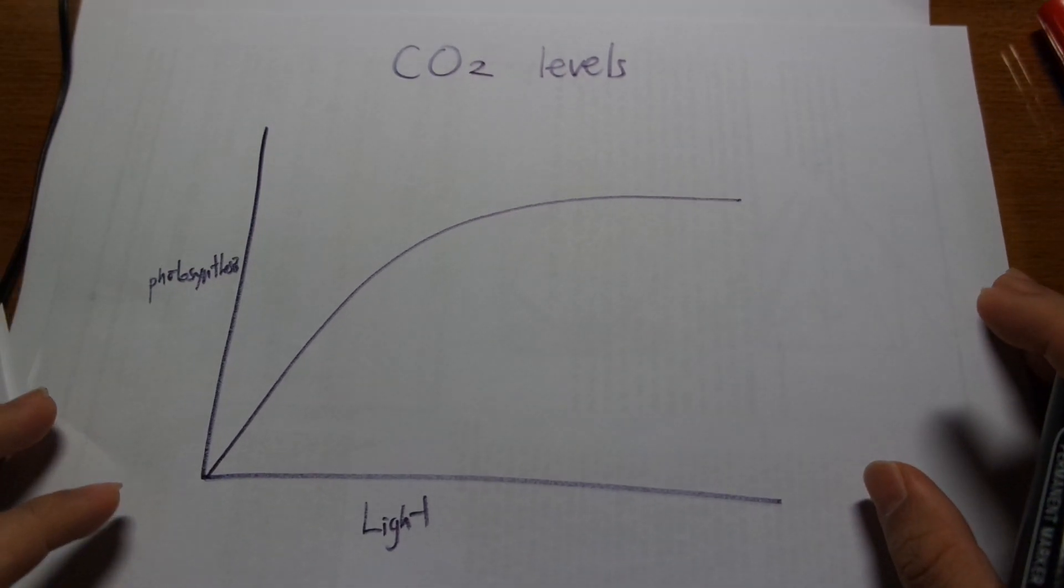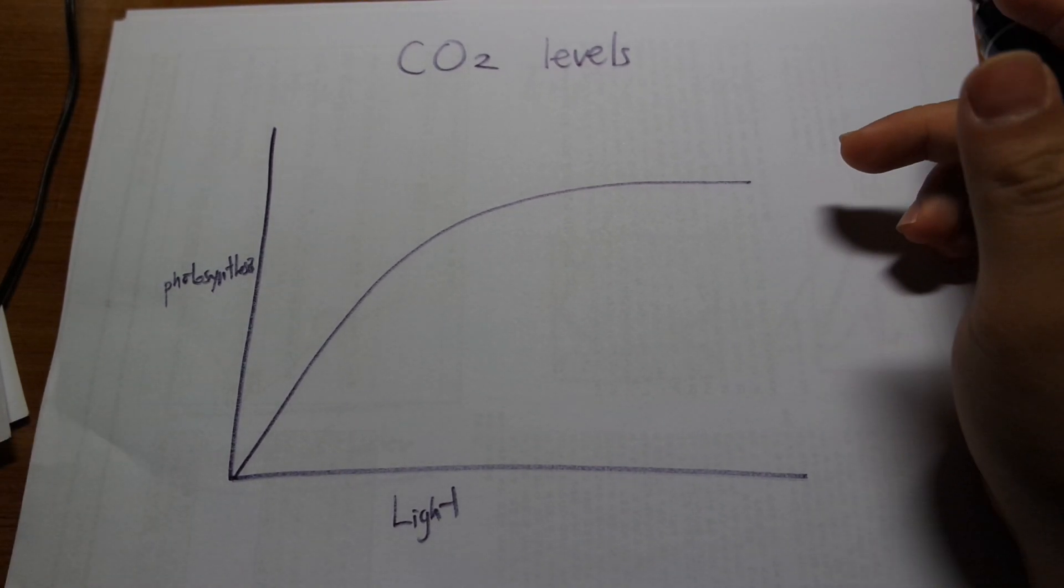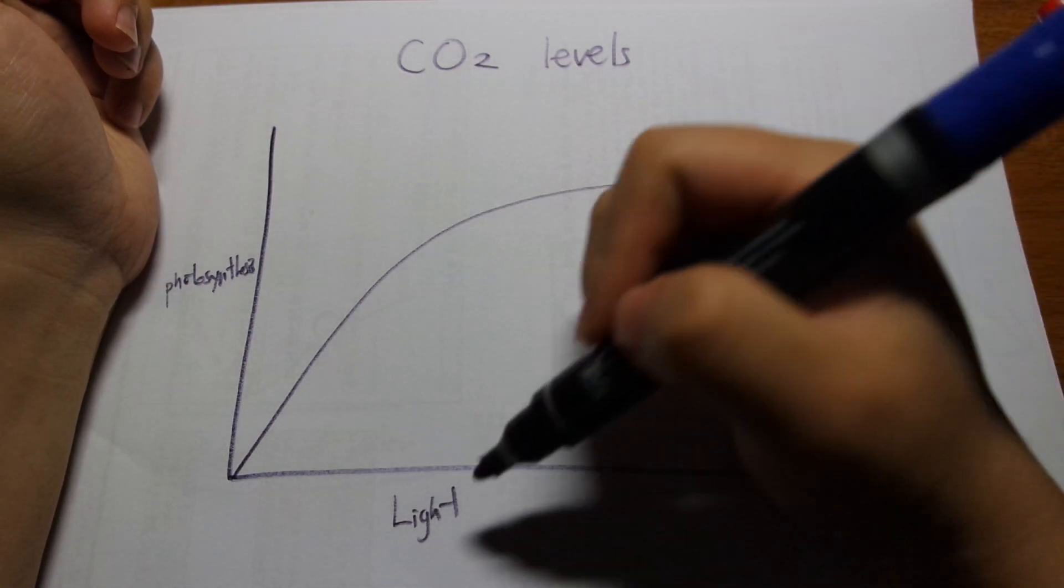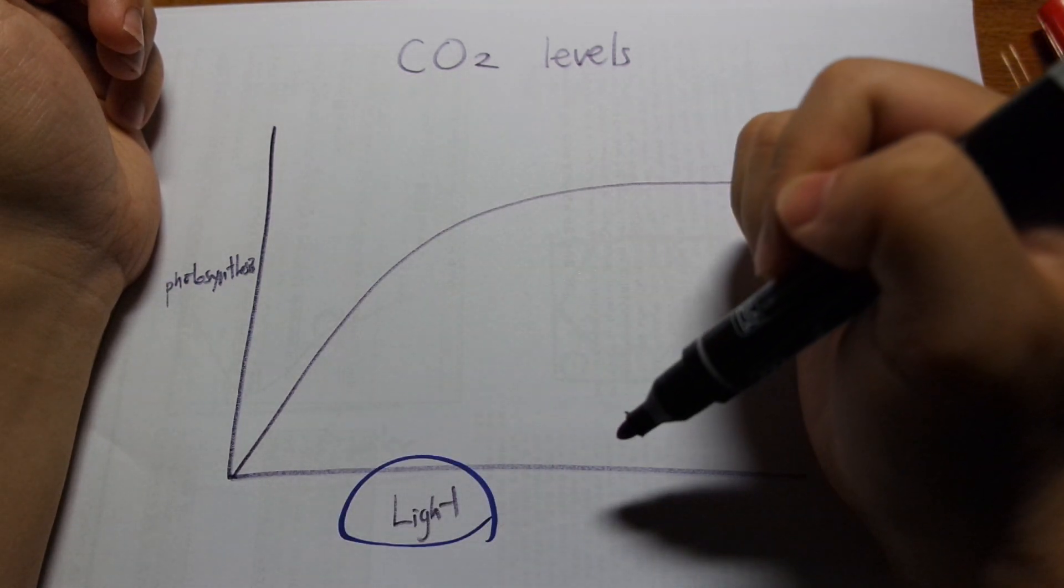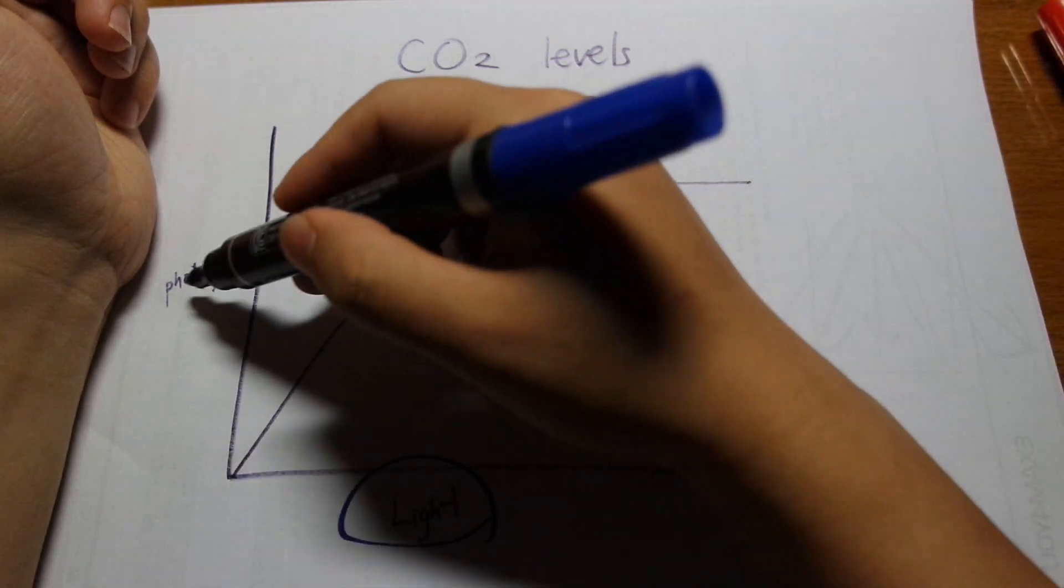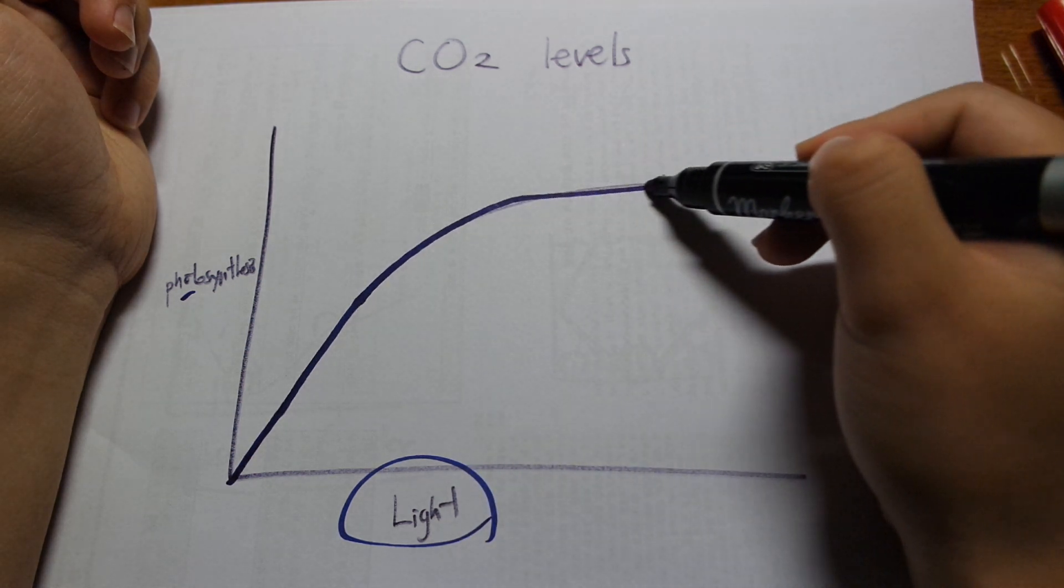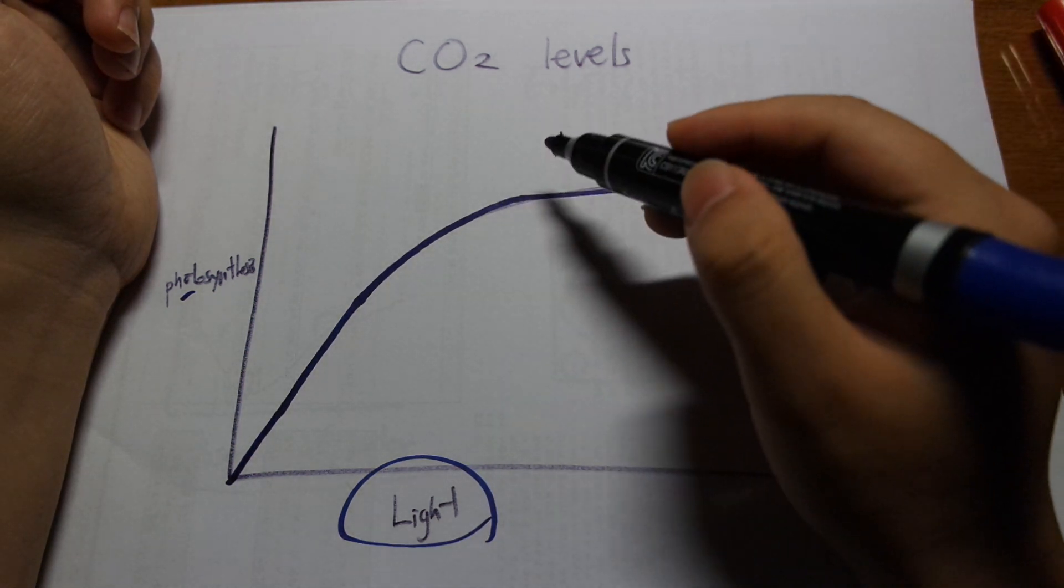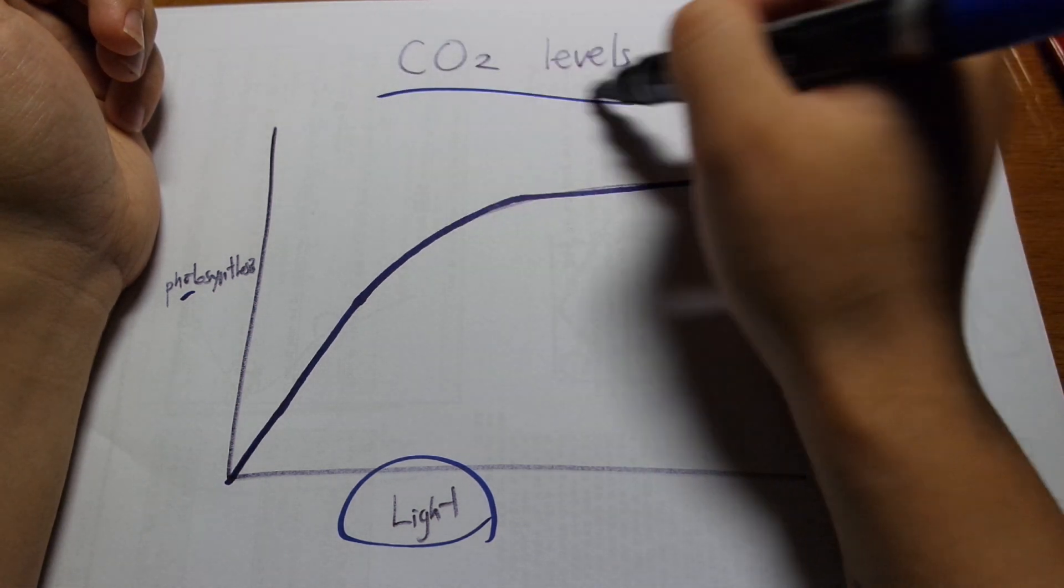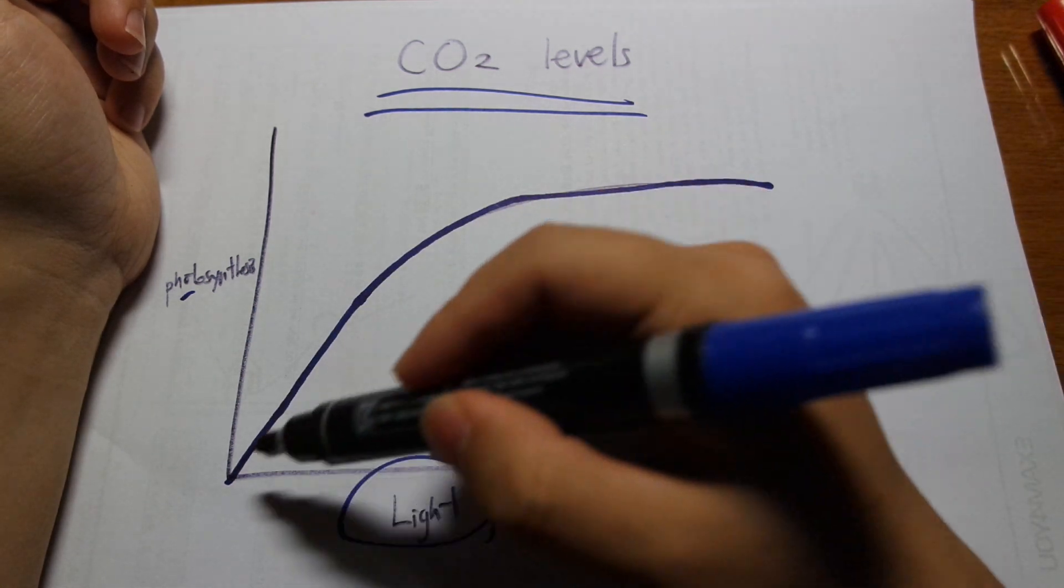Another thing you have to consider when using PAR is CO2 levels actually matter. So if you say lights, you have certain light intensity, and as light intensity increases, so will photosynthesis. So light intensity increases, and the photosynthesis will increase, and eventually it's going to plateau because there's a maximum level of a photosynthesis that a plant can do. But the CO2 level will also affect this. So this curve will look different depending on CO2.